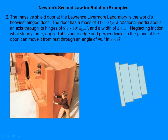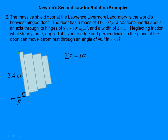Here's the door viewed from above. The axis of rotation is over here. The force is being applied at this edge, perpendicular to the plane of the door, and the door is 2.4 meters wide. Technically there are forces at the hinges, but they're all radial and don't apply a torque, so this is the only force that will do anything here.